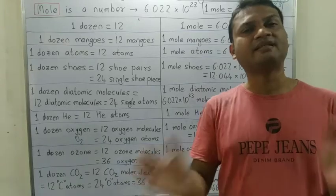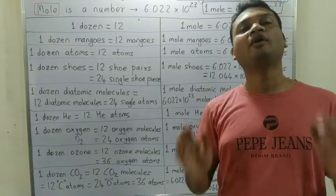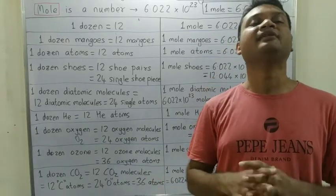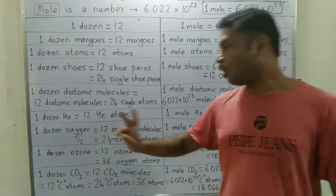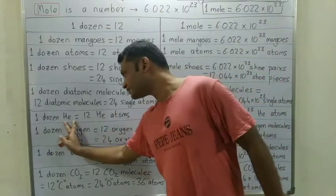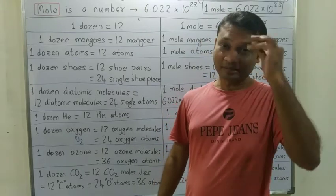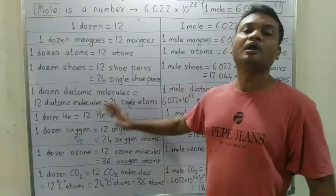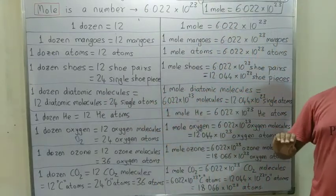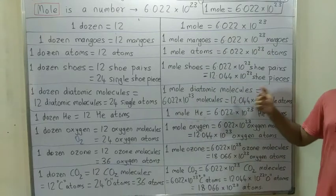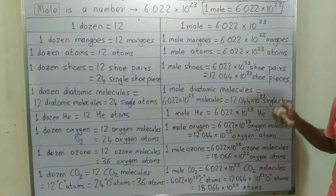However, oxygen combined with helium, neon, argon, krypton, xenon, radon — all these are noble gases, and all of them exist in monoatomic form. So one dozen helium means 12 helium atoms. So one mole helium is 6.022 into 10 raise to 23 helium atoms.